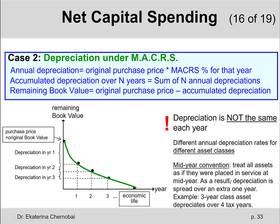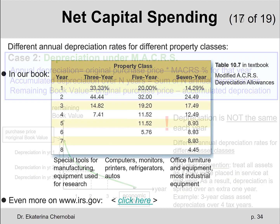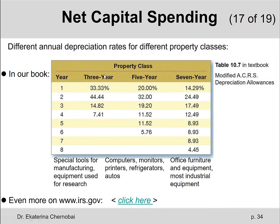When you look at examples of these tables, for a three-year property class, a five-year property class, and a seven-year property class, you'll notice that the three-year class has depreciation rates for four years, the five-year class has rates over six years, and the seven-year class has depreciation rates for eight years.